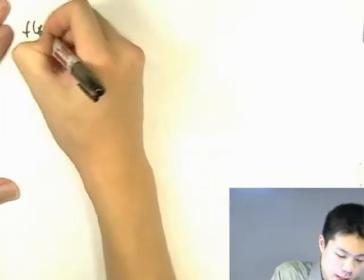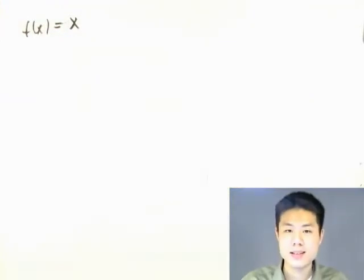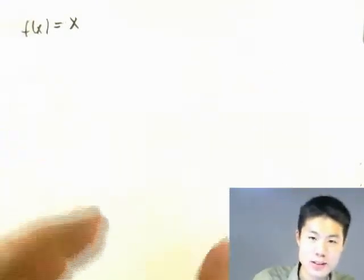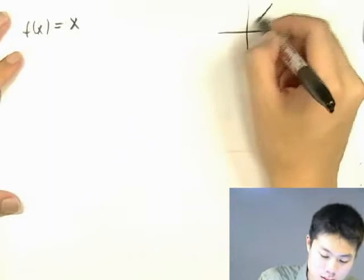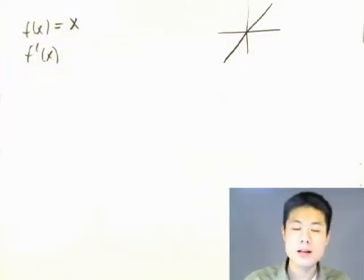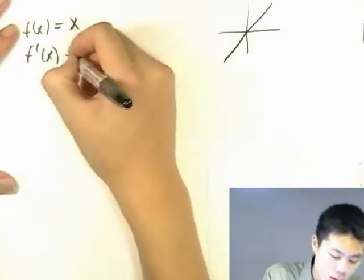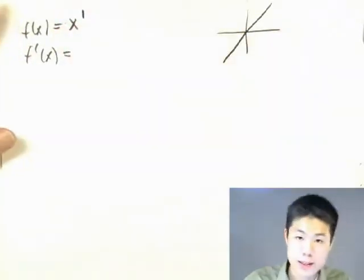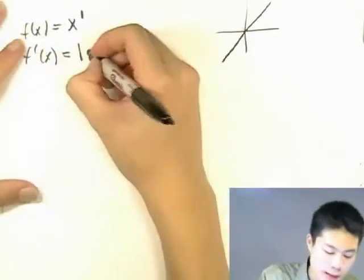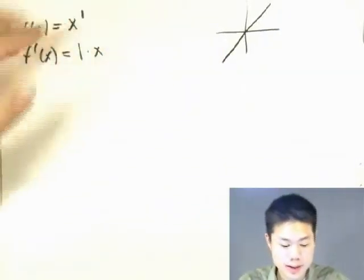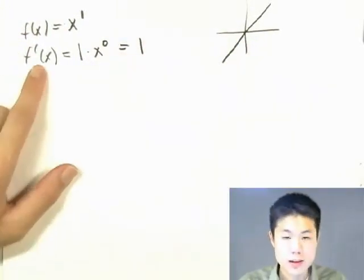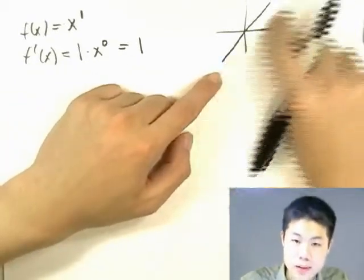Say f of x equals x — that's a diagonal line on a graph. What's the derivative? Well, x is actually x raised to the 1st power. So we bring the 1 down, multiply by x, and get 1 minus 1 equals 0, so x to the 0, which is 1. The derivative is 1, and indeed it is because the slope of y equals x is 1.